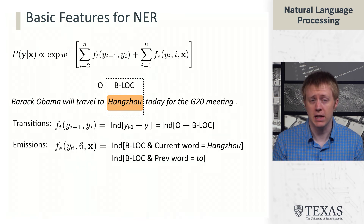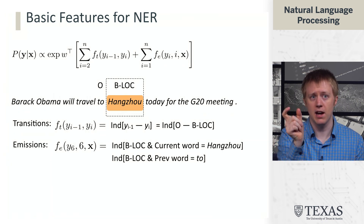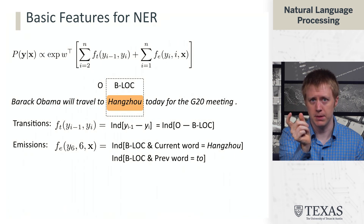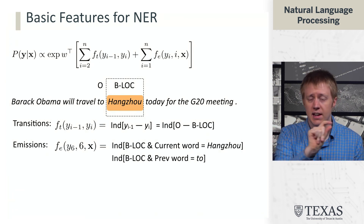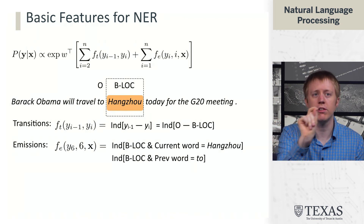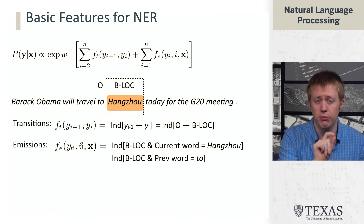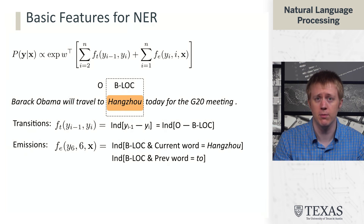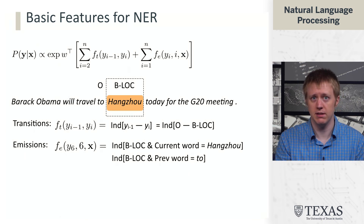Here's a more useful feature, and this is why context is really important for NER. This is an indicator of B-LOC being at the current position and the previous word being the word "the". Notice that we needed to look at yi to get B-LOC, and we needed to look at the sequence x indexed using i to say what word came before at the i-1 position. This is a feature extractor that's possible in our framework and is generally going to be very useful for identifying locations.